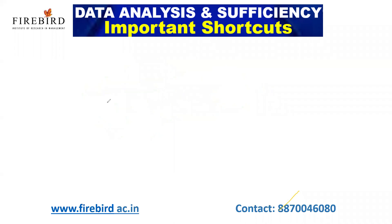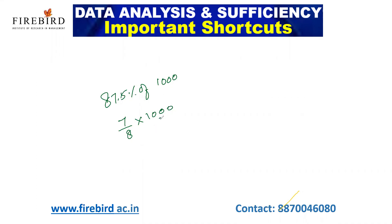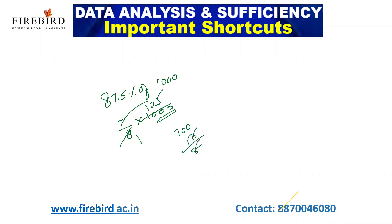And if I ask you what is 87.5% of 1000 — 87.5% is nothing but 7/8 into 1000. Keep in mind all 3-digit numbers are divisible by 8. So 1000 divided by 8 is 125, and 7 into 125: 7 into 100 is 700, 7 into 25 is 175, giving 875 as your answer.